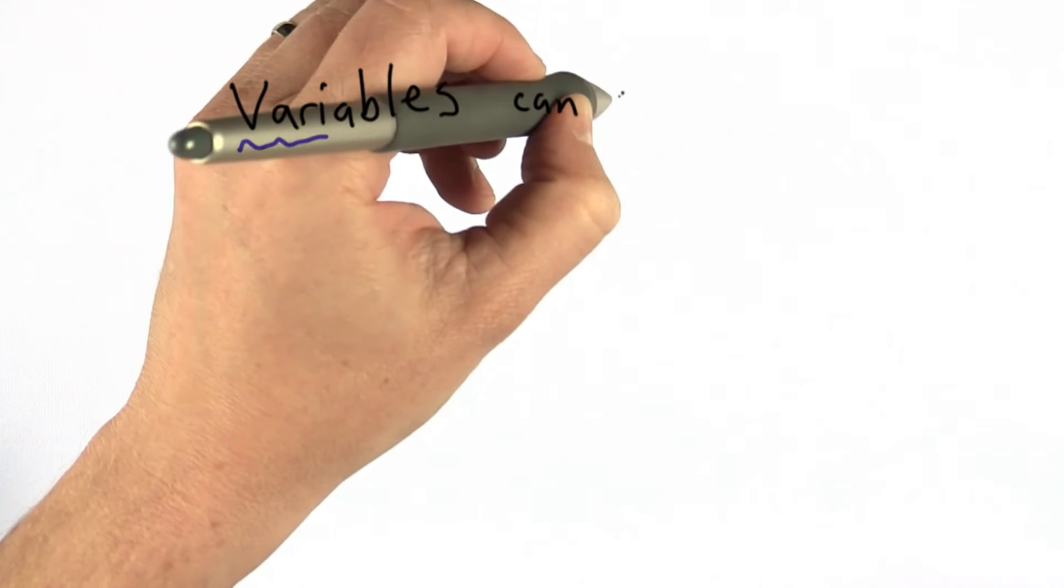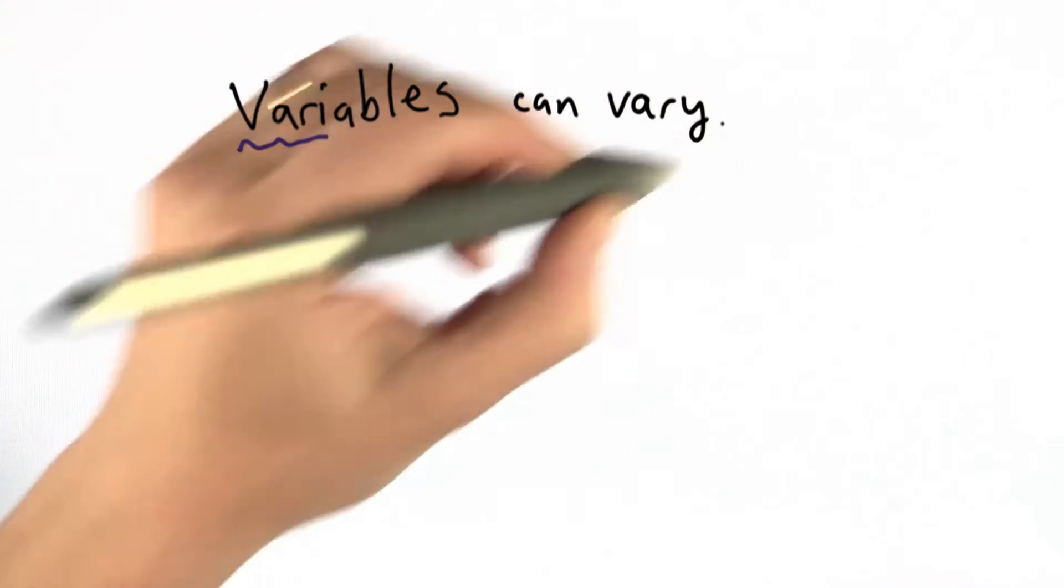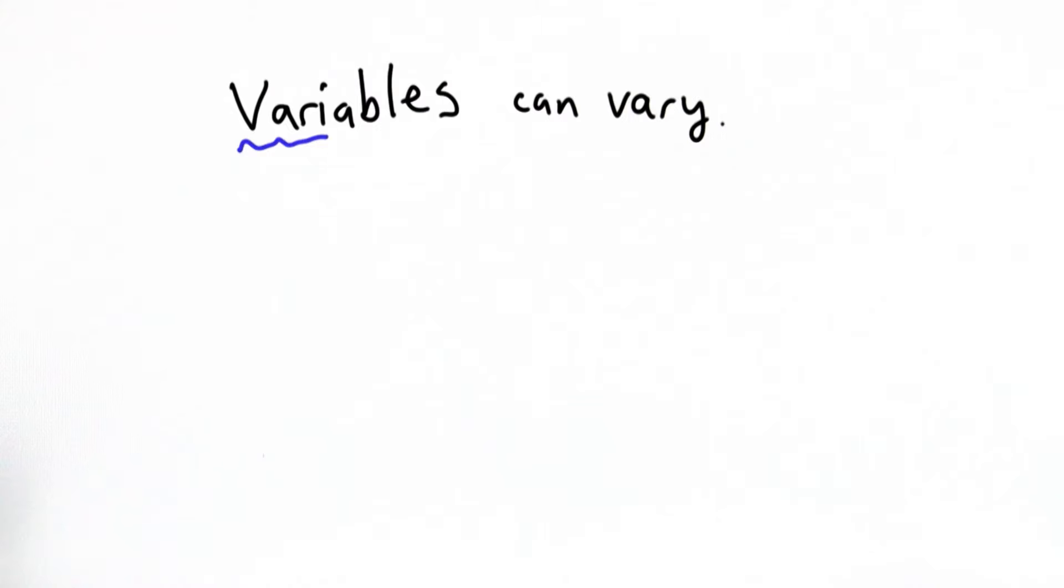So the speed of light is a constant, but the important thing about variables in Python is that they can vary. That's why they're called variables. Once we define a variable, we can change the value. And then when we use that name again, it refers to the new value.